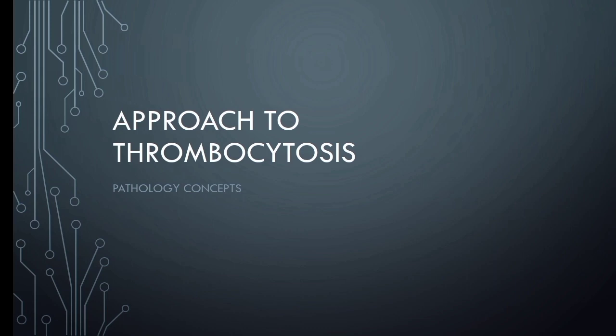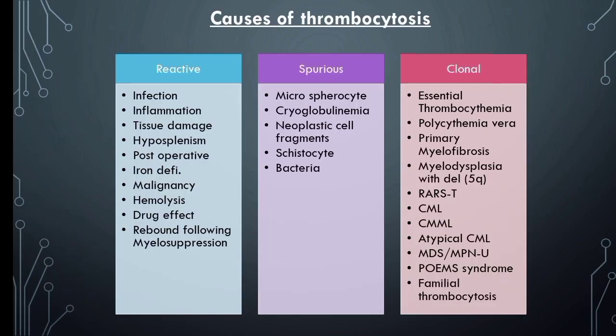Thrombocytosis can be spurious, attributed to a reactive process, or due to clonal disorders. Clonal thrombocytosis associated with myeloproliferative neoplasm carries a markedly increased risk. Extreme thrombocytosis is defined as a platelet count more than 10 lakh per microliter.